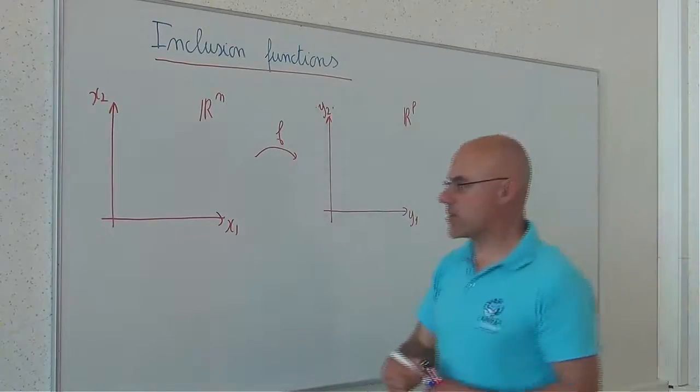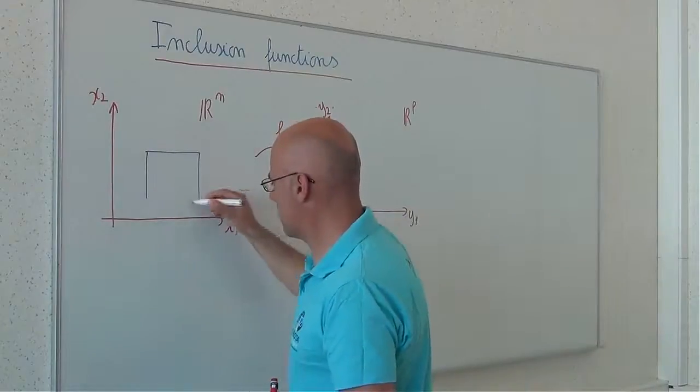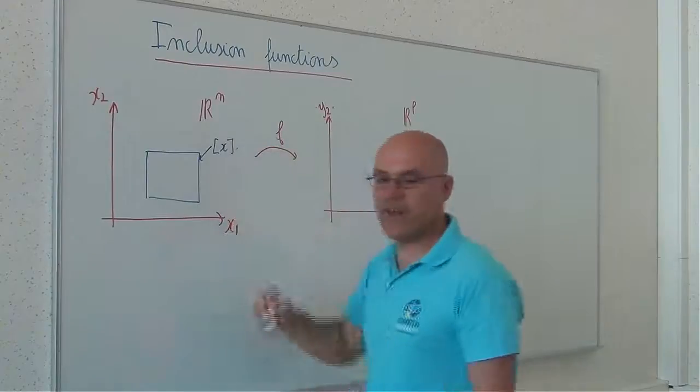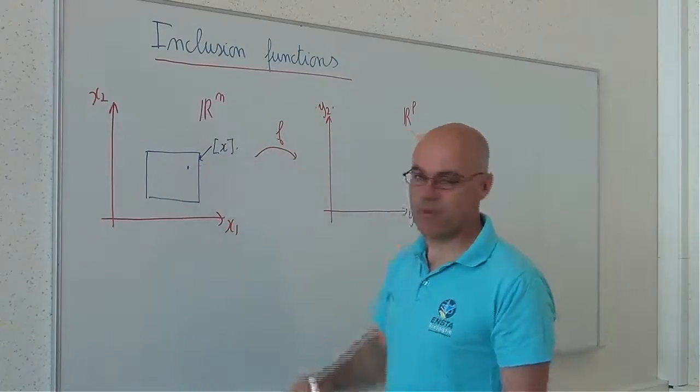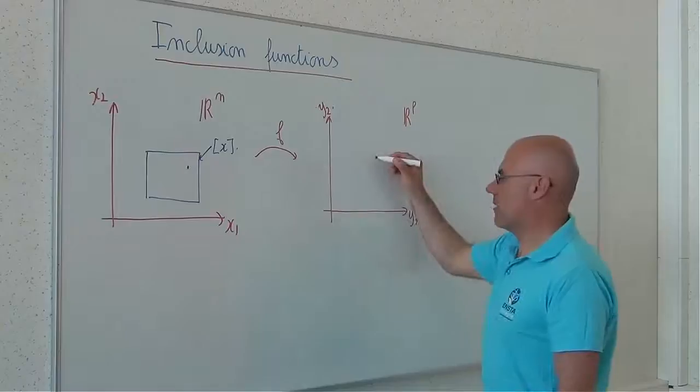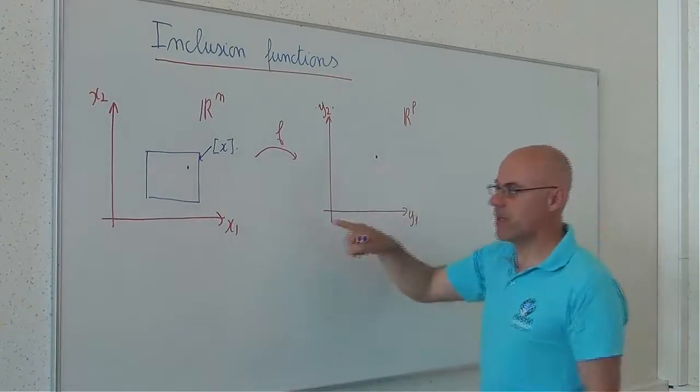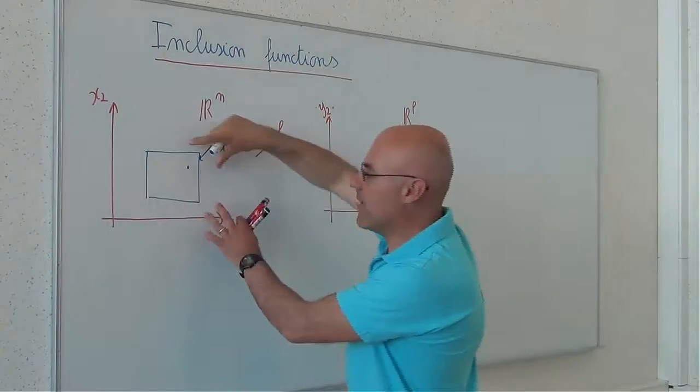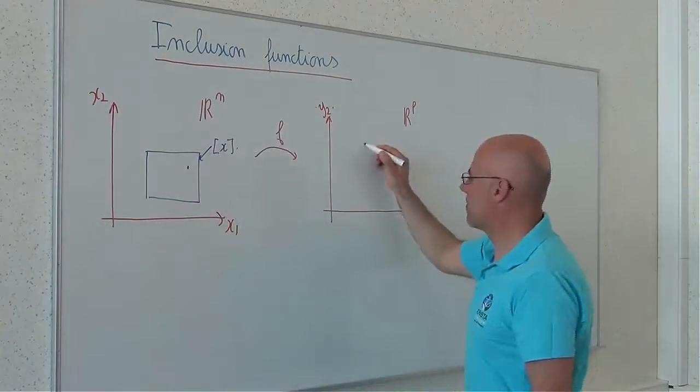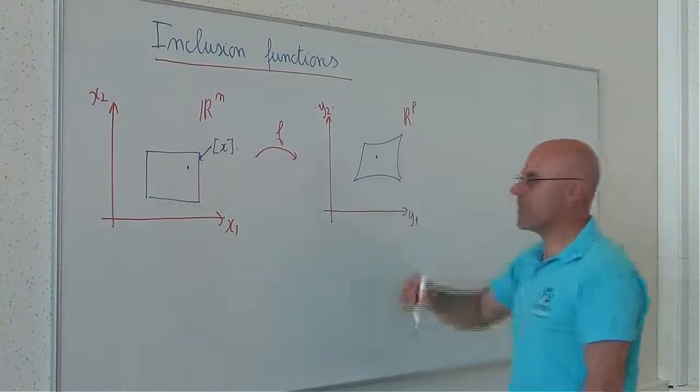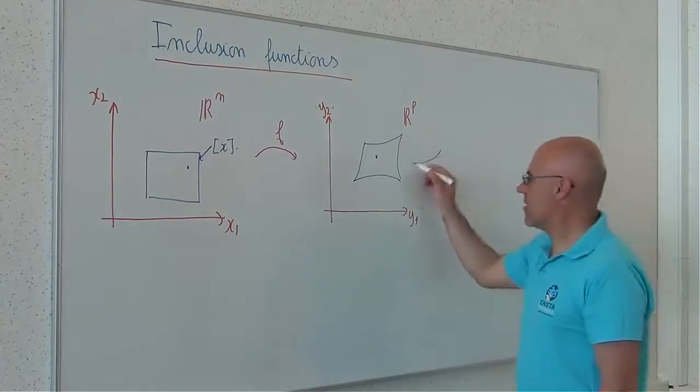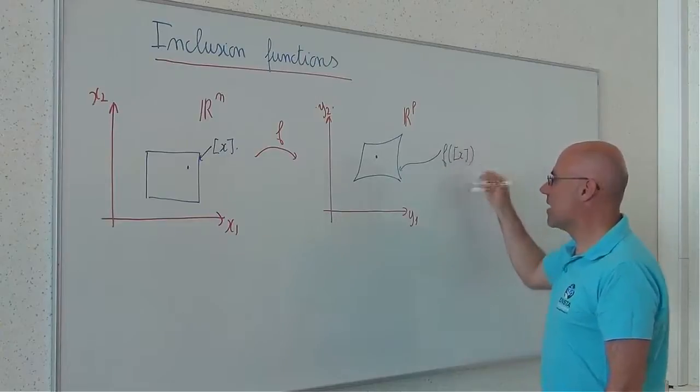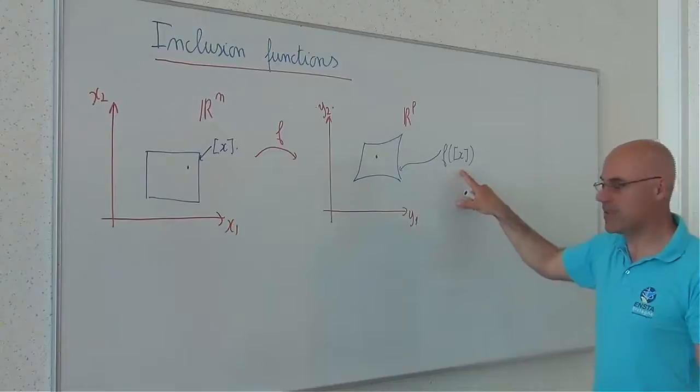If I take a box here, x, and if I take one point inside this box, I will add the image here. If I take all points, I will obtain the image of the box x. This image will be something like this. This is the image of the box x in a theoretical sense.